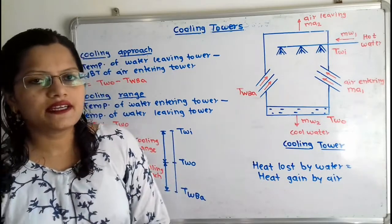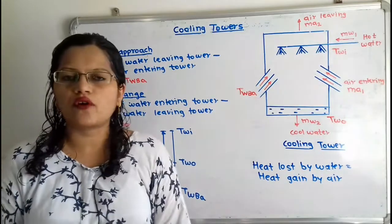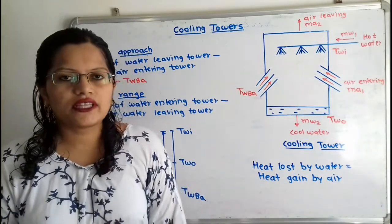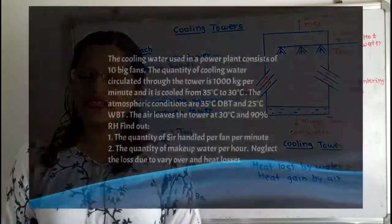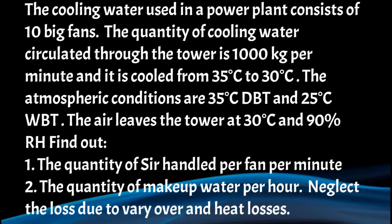Now we will understand the heat transfer process taking place inside the cooling tower with the help of a psychrometric chart. For that we will solve one example. The cooling water used in a power plant consists of 10 big fans. The quantity of cooling water circulated through the tower is 1000 kg per minute and it is cooled from 35°C to 30°C. The atmospheric conditions are 35°C dry bulb temperature and 25°C wet bulb temperature. The air leaves the tower at 30°C and 90% relative humidity. Find: (1) the quantity of air handled per fan per minute, (2) the quantity of makeup water per hour. Neglect losses due to carryover and heat losses.